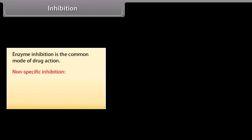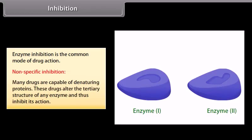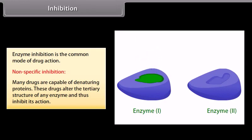Enzyme inhibition is the common mode of drug action. Non-specific inhibition: many drugs are capable of denaturing proteins; these drugs alter the tertiary structure of an enzyme and thus inhibit its action. For example, heavy metal salts, alcohol, formaldehyde, and phenol inhibit enzymes non-specifically.